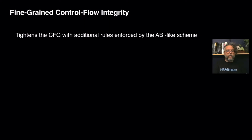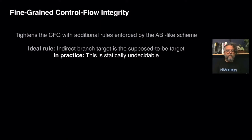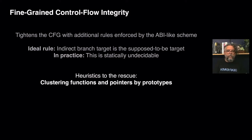Because of situations like this, researchers came with the idea of fine-grained control flow integrity, which tightens the control flow graph of the application even further by enforcing additional rules through an ABI-like scheme. Ideally, an indirect branch should only be allowed to execute if its target is the supposed-to-be target. But in practice, you can't really define this rule during compilation time, as this is a statically undecidable problem. Because of that, we need to use heuristics to reach a practical implementation.